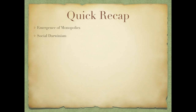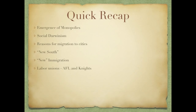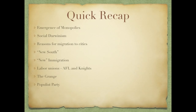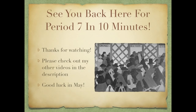Let's do a quick recap for Period 6. Definitely know the reasons for the emergence of monopolies, what Social Darwinism is, and that the rich used it to justify their position. Know the reasons for migration to cities, what the New South was, what new immigration was and where immigrants settled, labor unions — specifically that the AFL was made up of skilled workers and the Knights of Labor were skilled and unskilled. The Grange and Populist Party were ways farmers tried to better their situation, and many Populist ideas came to fruition in the Progressive Era. Know westward expansion, its impact on natives, key battles, and that Plessy v. Ferguson established separate but equal, later overturned by Brown v. Board of Education.